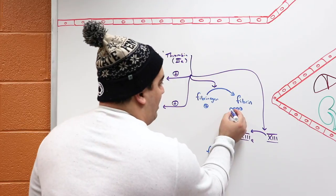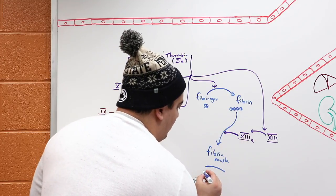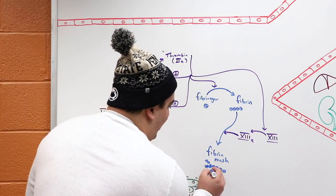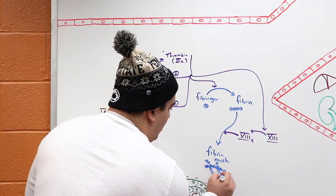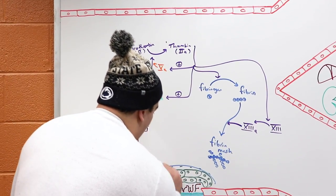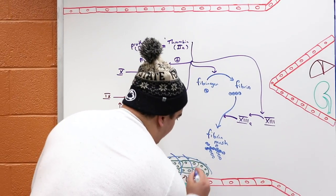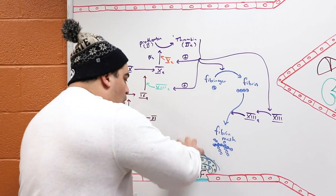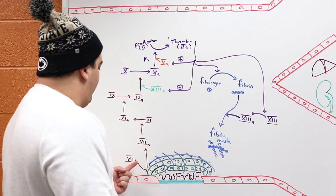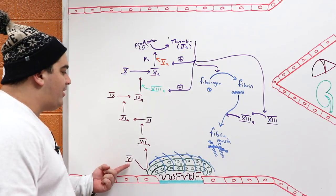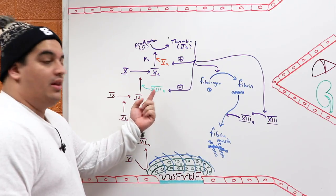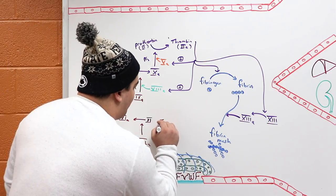These fibrin strands cross-link fibrinogen molecules into nice strands that help stabilize the platelet plug and anchor it in place. The pathway from factor 12, to factor 11, to factor 9, in combination with factor 8 — this is all part of the intrinsic pathway.